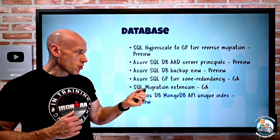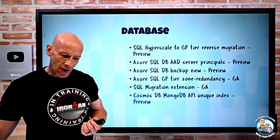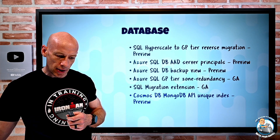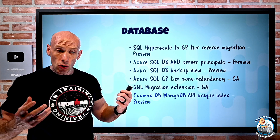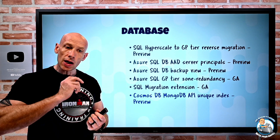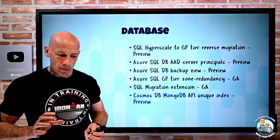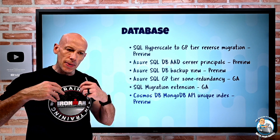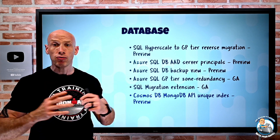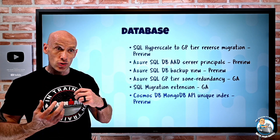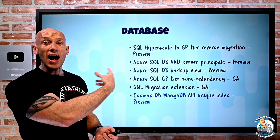Cosmos DB MongoDB API unique index is in preview. A unique index ensures that two or more documents can't have the same value for indexed fields. Previously, you could only create a unique index if the collection was empty. This feature changes that — you now have the flexibility to create unique indexes whenever you want, with no need to plan them out in advance before inserting data.